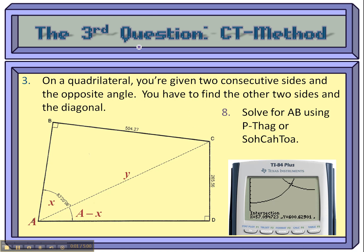All right, so continuing our video tutorial on the CT method for question 3 on the Trigstar test. Just a quick recap here. On this quadrilateral, we took the angle that they gave us, angle A, typed that into the calculator, broke it up into two parts. The top part we called X, the bottom part was A minus X. That's the whole angle minus the top part.